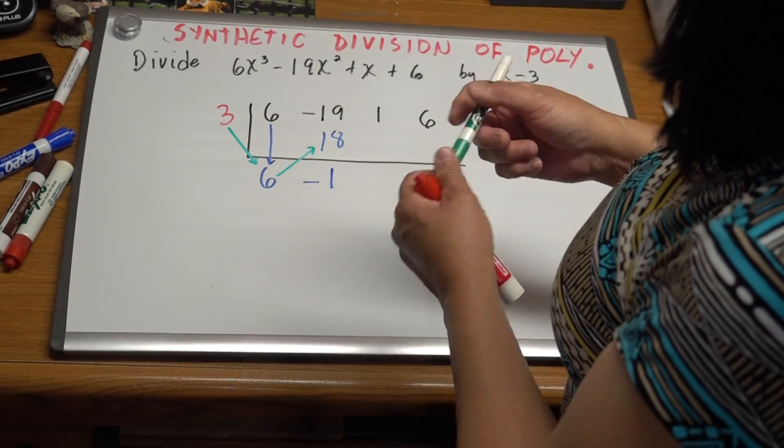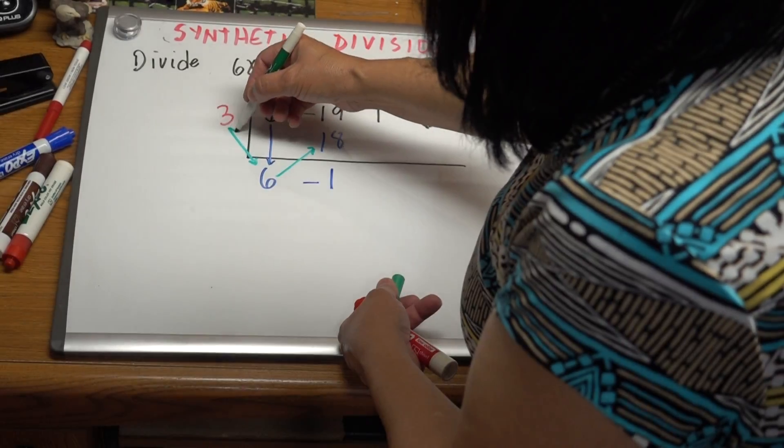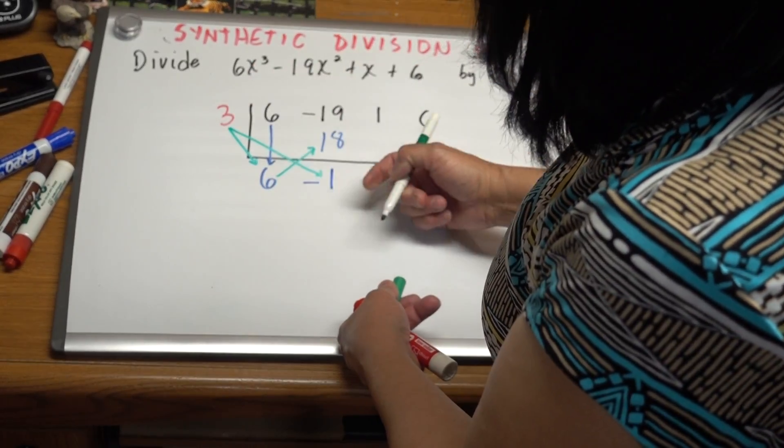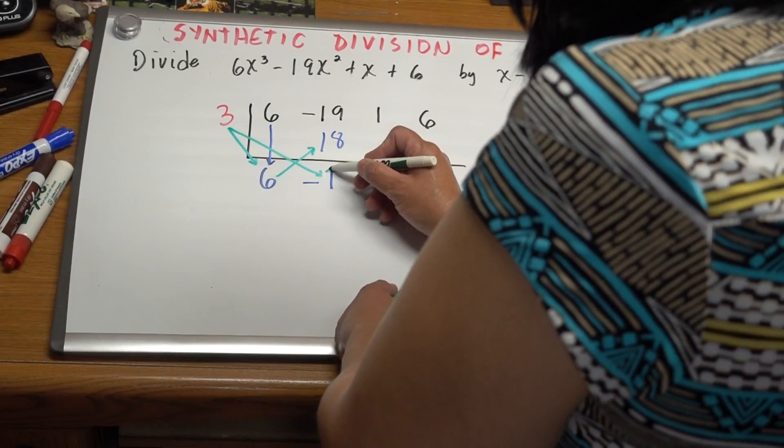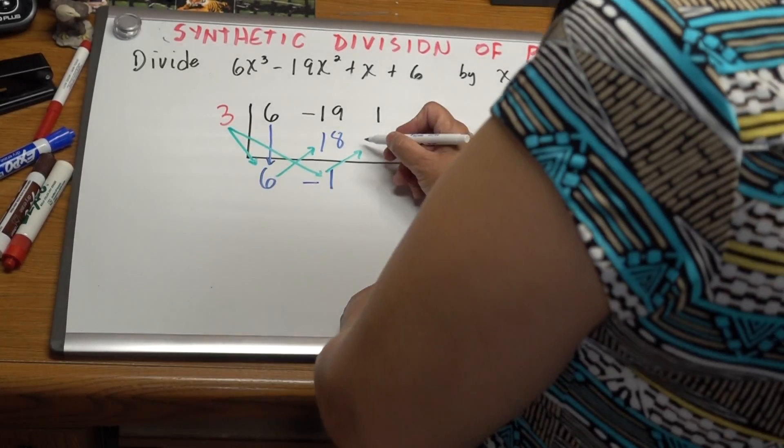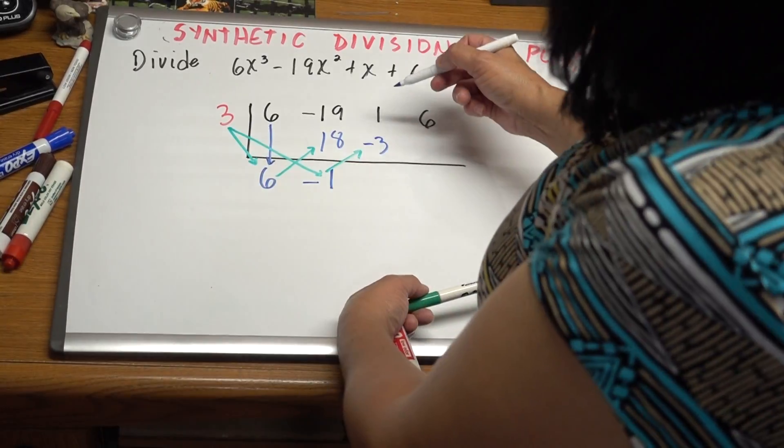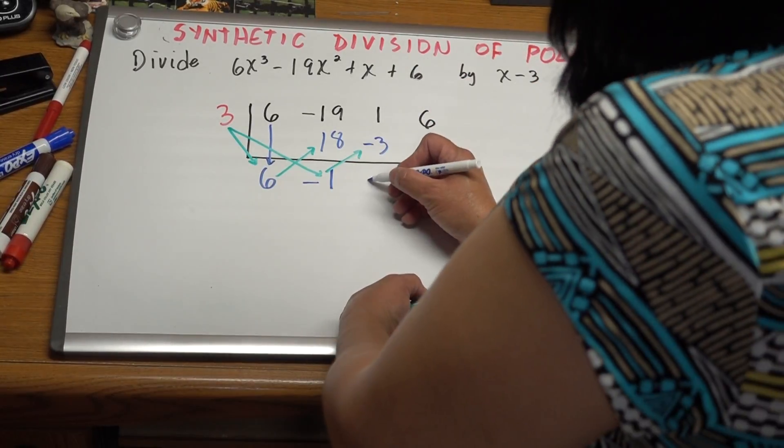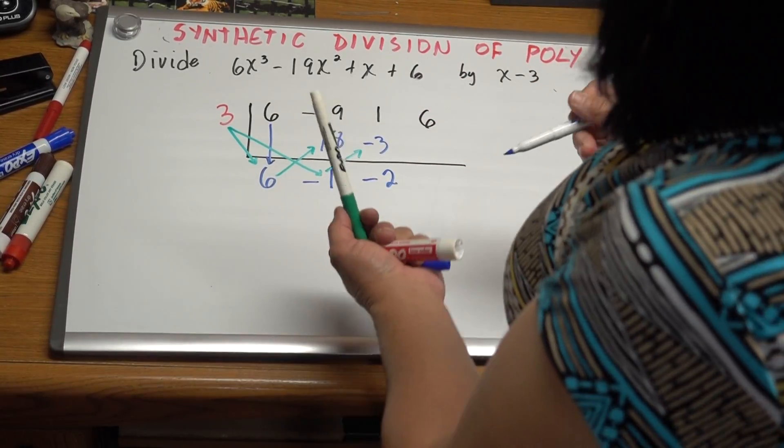Repeat the process. Multiply. 3 times this number, which is -1, is -3. You put the answer right there, -3. Add. 1 plus -3 is -2.